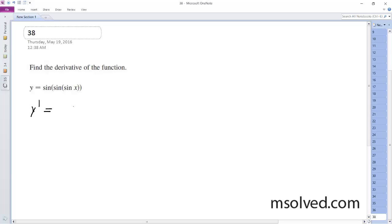So y prime is going to be equal to... Starting off, the derivative of sine is just cosine. This is what we're going to have initially, and then we'll take it a step further.